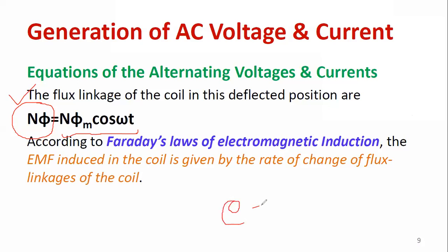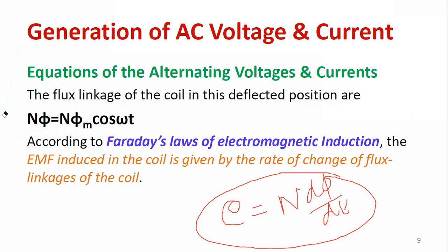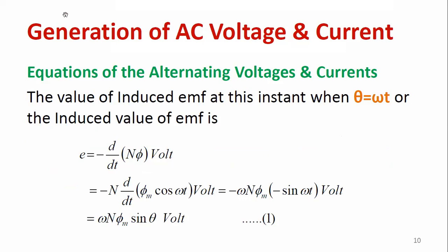According to Faraday's law, the induced EMF is e = −N·(dφ/dt). The induced EMF depends on the number of turns and the rate of change of flux linkage. This is the fundamental principle used to derive the expression for total voltage and current generated in the coil.